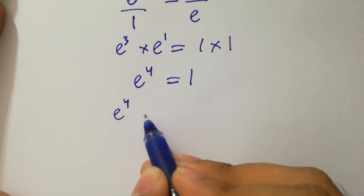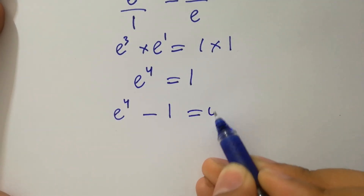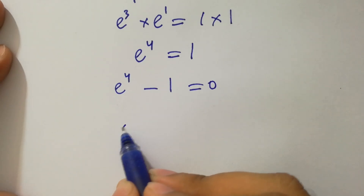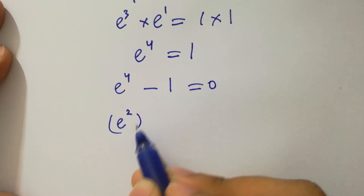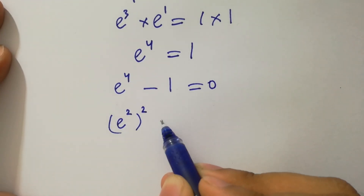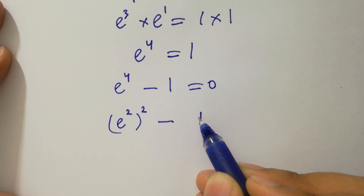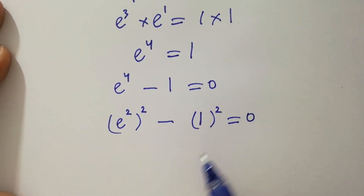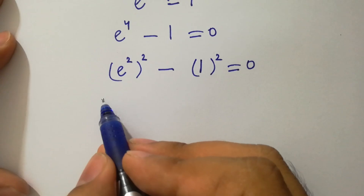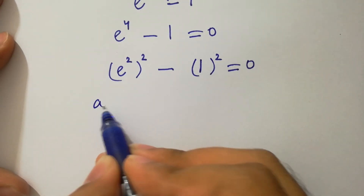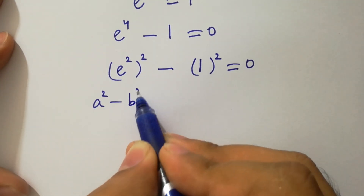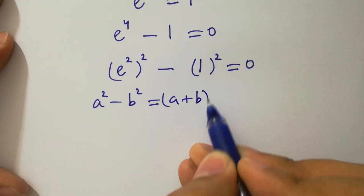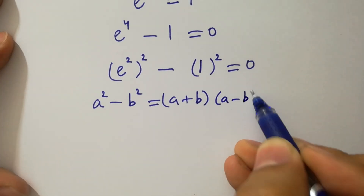This gives e to the power 3 plus 1, which is e to the power 4, equals 1. So e to the power 4 minus 1 equals 0, which is the same as (e squared) squared minus 1 squared equals 0. We apply the formula a squared minus b squared equals (a plus b)(a minus b).